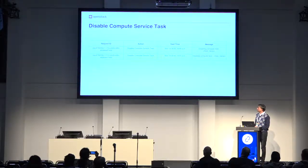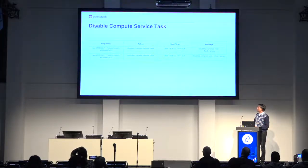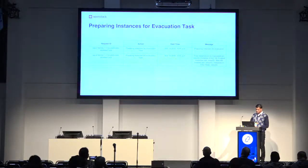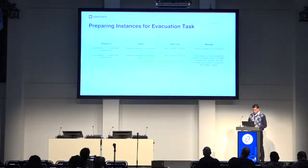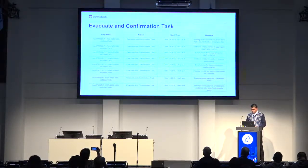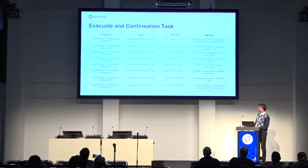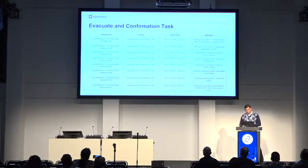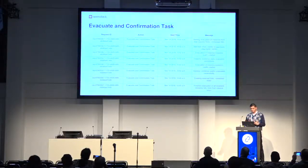We are also going to show the event details in verbose form as well. For all three tasks, you'll be able to see information like which host was disabled, and in the second task how many instances will be evacuated, how many are HA-enabled, non-HA-enabled, and how many are in error state. In the 'evacuate and confirm' task, you'll be able to see the current progress. If there are 20 instances running on the compute node, you'll be able to see all those details. This view gives the operator a clear idea of what is currently happening in the background — that is what we want to support in the Train release.